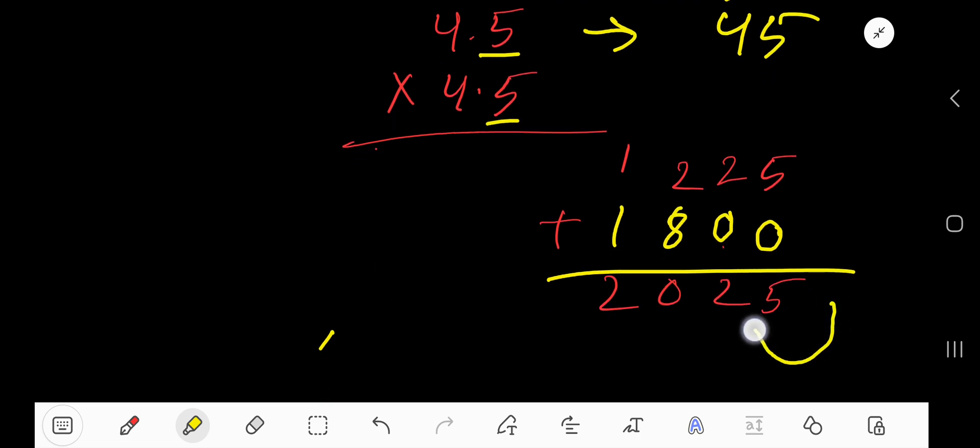This is one digit, two digits. So you have to start from right to left and place the decimal point to the left. 20.25 is the answer.